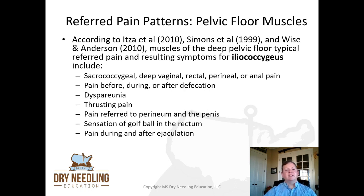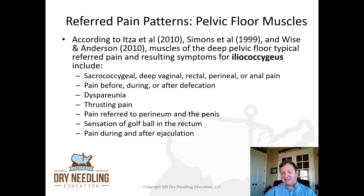For iliococcygeus: sacrococcygeal, deep vaginal, rectal, perineal, or anal pain; pain before, during, or after a bowel movement; painful intercourse; thrusting pain — that deep, deep pelvic pain with intercourse thrusting; pain referred to the perineum and the penis; sensation of a golf ball in the rectum; and pain during and after ejaculation — obviously a very concerning symptom for individuals with male anatomy. Iliococcygeus can be implicated in all of these.